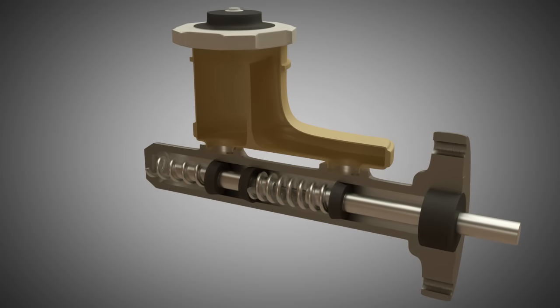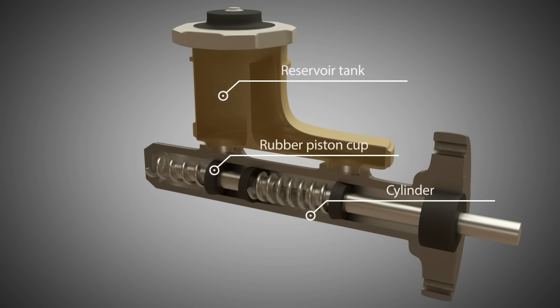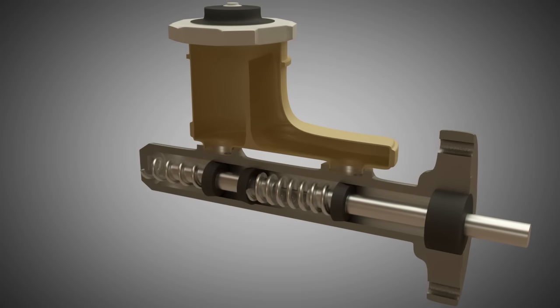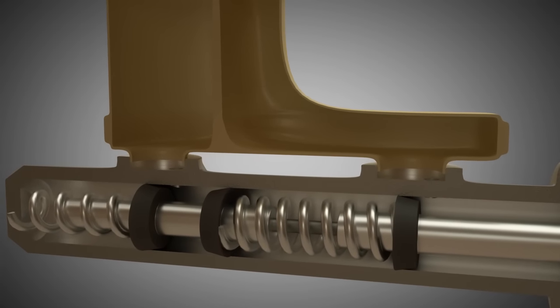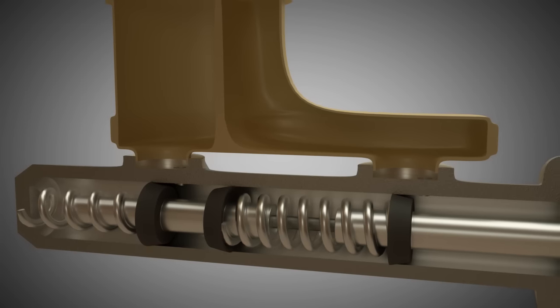This master cylinder has a reservoir tank which contains the brake fluid and a cylinder. Rubber piston cups are located in the cylinder. The rubber piston cups form brake circuits. Since there are two brake circuits, such a master cylinder is called tandem brake master cylinder.